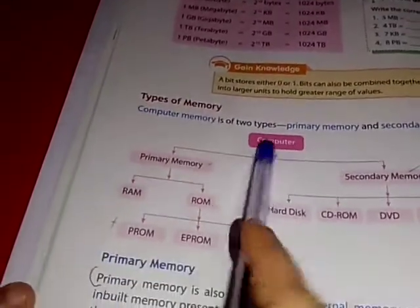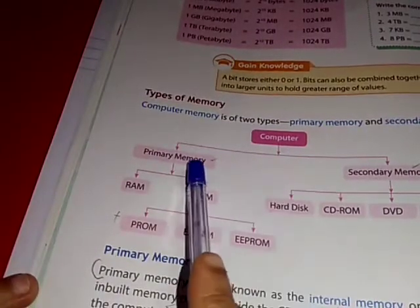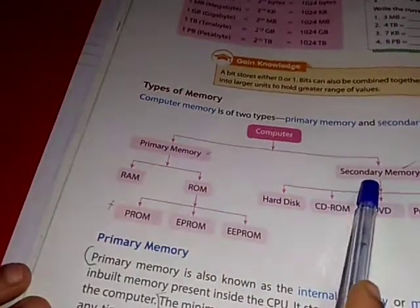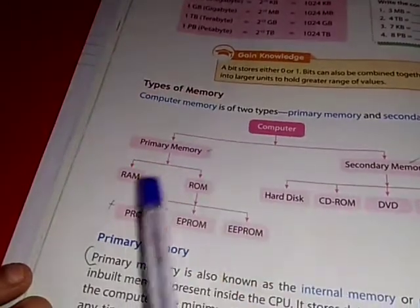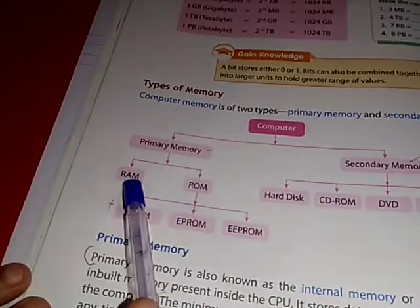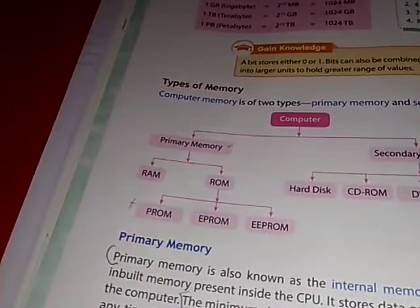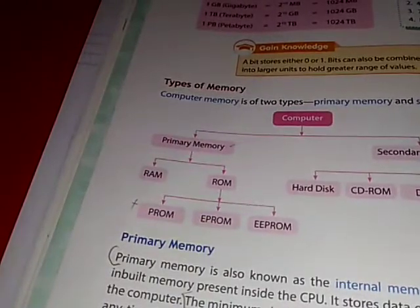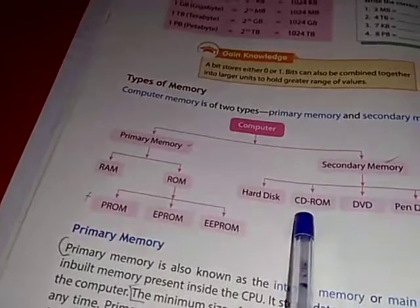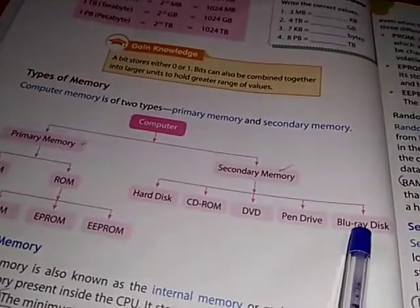Types of memory. Computer memory is of two types: primary memory and secondary memory. Primary memory includes RAM and ROM. Secondary memory includes hard disk, CD, DVD, pen drive, and Blu-ray disk.